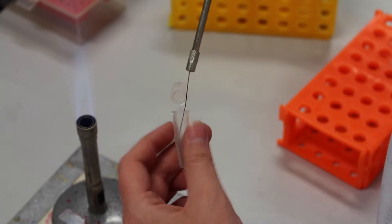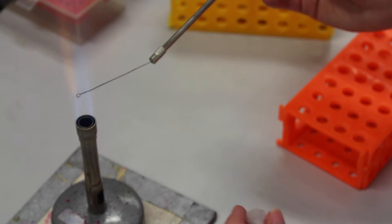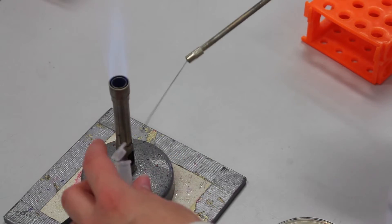Swirl the loop around carefully in the tube containing distilled water. Sterilize the loop. Swirl the loop in the tube.